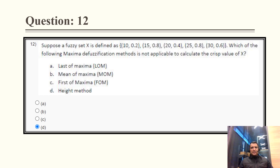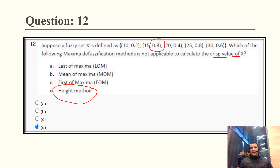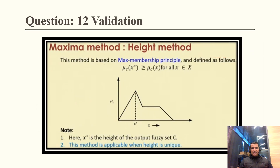Question 12: Suppose fuzzy set X is defined with given membership values. Which maxima defuzzification method is NOT applicable to calculate the crisp value of X? Last of maxima, mean of maxima, and first of maxima are all applicable. The height method is not applicable here because it requires a unique membership value. In this question, both elements 15 and 25 have membership value 0.8, so the height is not unique and the height method cannot be used.